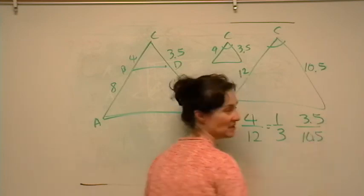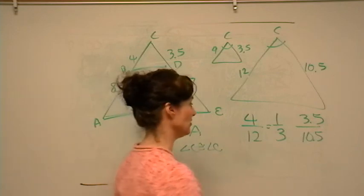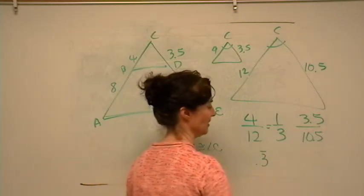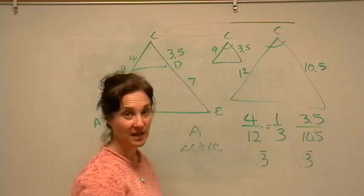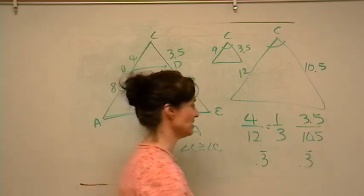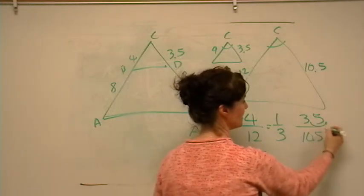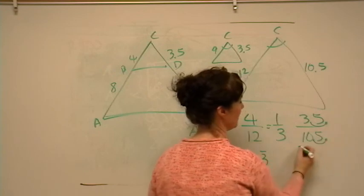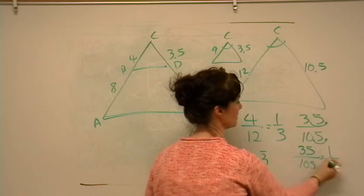And then 3.5 to 10.5. Now, one way to do it is just to check it on the calculator and see if it's correct. You can divide, and you're going to get 0.3 repeating here, and 0.3 repeating there. That works. Another way to do it, using just fractions, is to go ahead and move this decimal. You're multiplying by 10. That moves the decimal over 1. And we get 35 over 105, which reduces to 1 third.